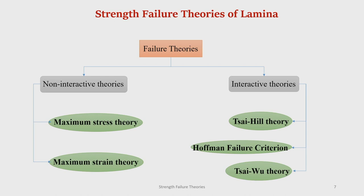So this is why failure theory is required: to extend the same philosophy applied for isotropic material, but with the anisotropy in stiffness and strength taken into account. There are different types of macroscopic failure theories, basically divided into two types: non-interactive or independent theories, and interactive theories. Non-interactive means it is assumed that there is no interaction among the stresses. If you apply sigma_1, the failure point is sigma_1Tu; if you apply sigma_2, the failure point is sigma_2Tu. But what happens if you apply sigma_1 and sigma_2 together — the failure is actually influenced by both, and there are interactions.